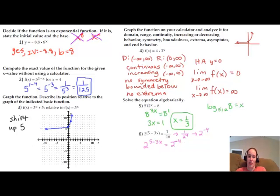Now we can set the exponents equal to each other. Then solve it like a normal equation like it is. x divided by negative 3. So x equals 3 times negative 4, which equals negative 12.